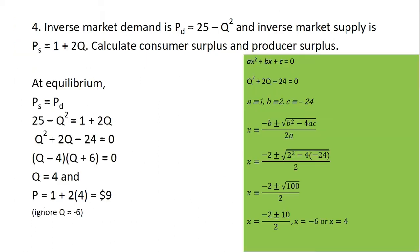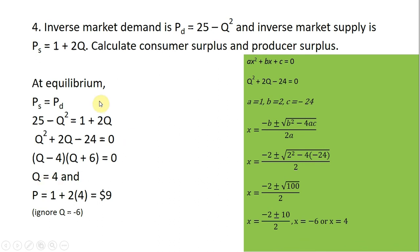For our final example, we have an inverse market demand and inverse market supply curve and want to calculate consumer surplus and producer surplus. Setting both equations equal to one another leads to a quadratic equation. Using the quadratic formula or factoring, we get Q equals 4 — we can ignore the Q minus 6 solution as it has no economic meaning in this context. When Q equals 4, plugging into either price equation gives an equilibrium price of $9.